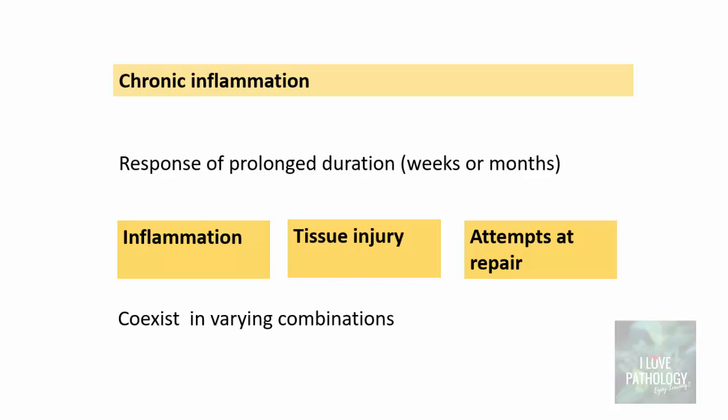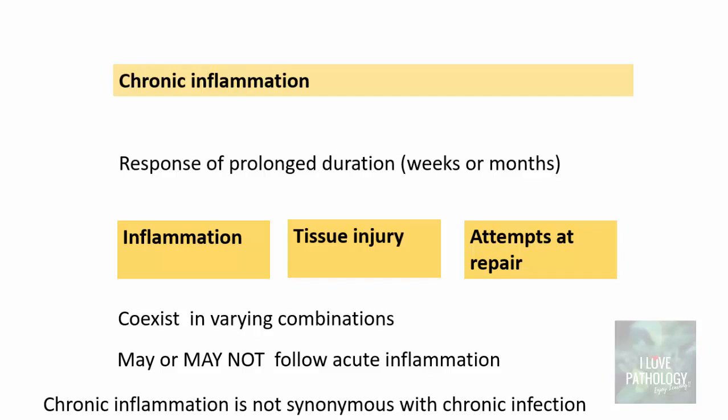All three things — inflammation, tissue injury, and attempts at repair — co-exist in varying combinations. In some cases inflammation may be predominant; in some cases injury may be predominant; or in some cases it will be at the stage of repair. Chronic inflammation may or may not follow acute inflammation. As I discussed in the last tutorial, one outcome of acute inflammation is that it might progress to chronic inflammation, but it is not always the case. You also need to understand that inflammation and infection are not synonymous terms, so chronic inflammation is not synonymous with chronic infections.